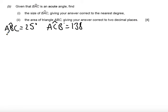And then so angle BAC. We're just going to use angles in a triangle. So we're going to do 180 minus 25 minus 138. So I've got 180 minus 163 gives me 17 degrees.